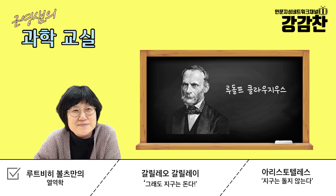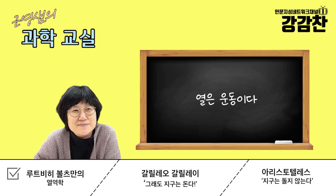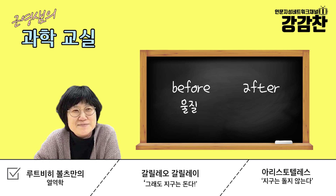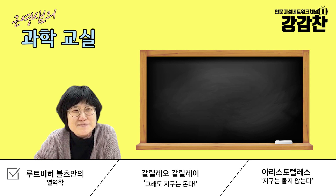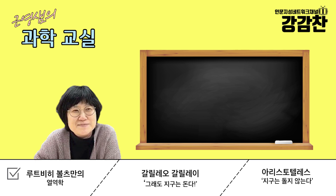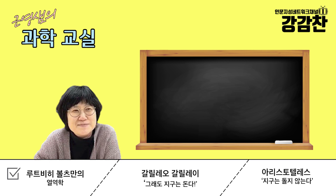그러다가 클라우지우스라고 하는 독일의 물리학자가 1850년에 이 열을 다르게 정의해요. 열을 '운동이다'라고 정의하는 거예요. 뭔지는 모르지만 어떤 운동으로 생각해보자고 했습니다. 이 차이가 중요합니다. 그전에는 물질로 이해했지만, 이제 운동으로 이해하기 시작한 거예요. 물질이라는 건 실체적인 사물 같은 거지만, 운동은 실체적이지 않습니다. 운동이라는 것 자체가 사실은 보이지 않는 세계예요.